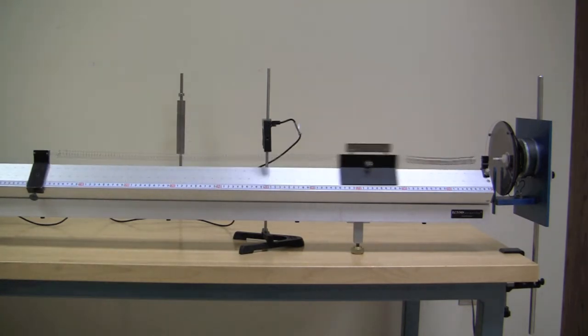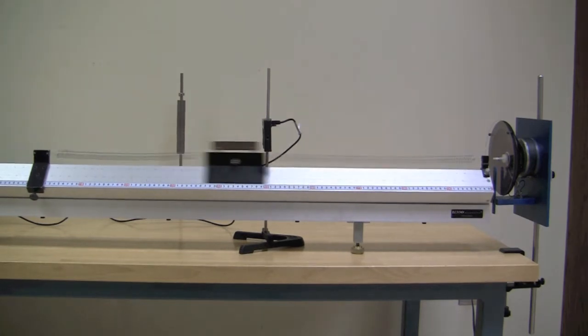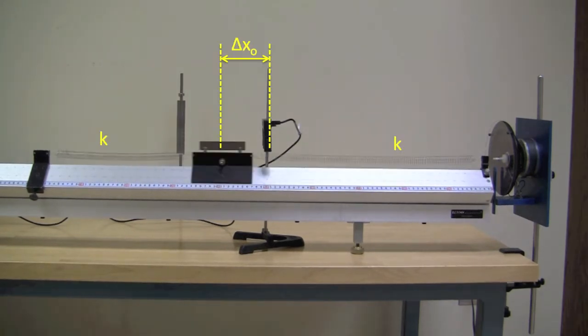You have to show experimentally that the period is independent of the amplitude. For the next part, add weight to the glider and again study the period versus the total oscillating mass. The restoring force on the glider is 2k delta x.